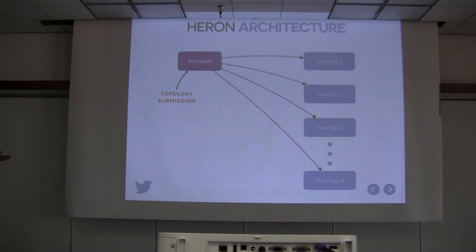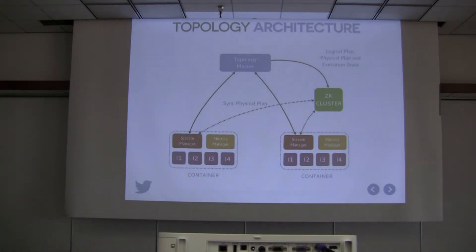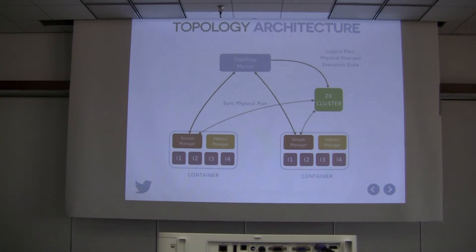Everything is scheduled in terms of containers. There is a special container — container zero — that starts first and launches a process called the topology master. The topology master manages the entire topology during its lifecycle. Once it comes up, it figures out how many additional resources are required to run the topology, then contacts the scheduler requesting, for example, 100 containers each with 8 CPUs and 10 GB of memory.